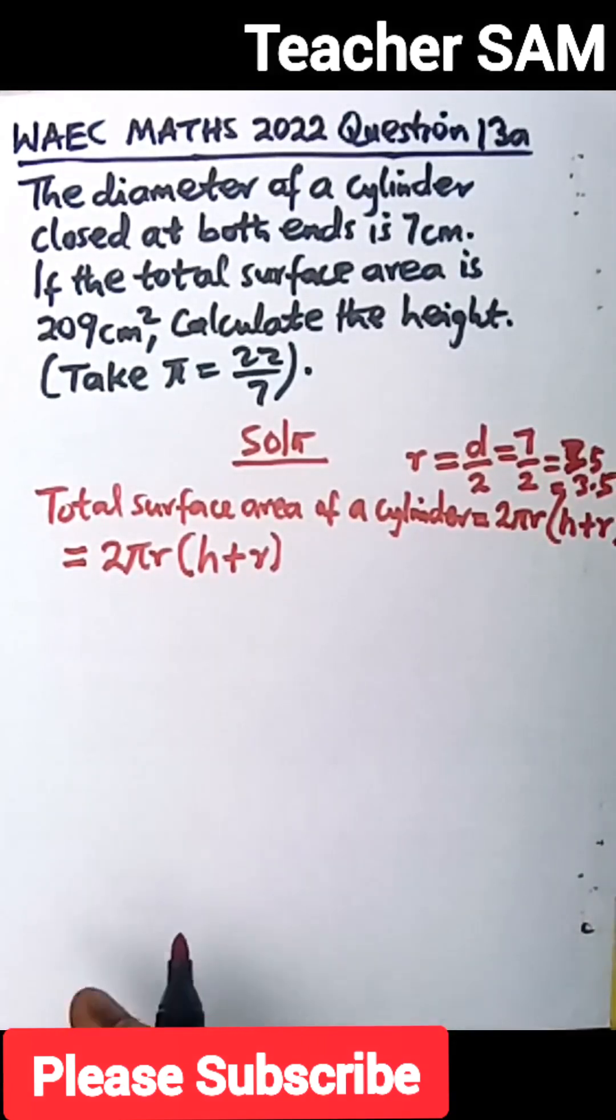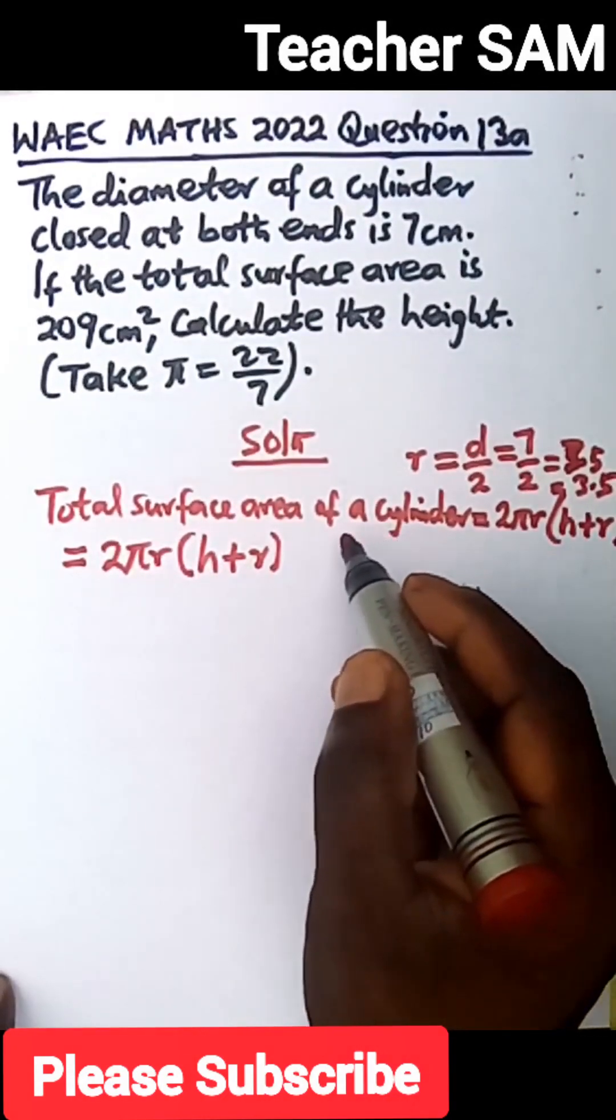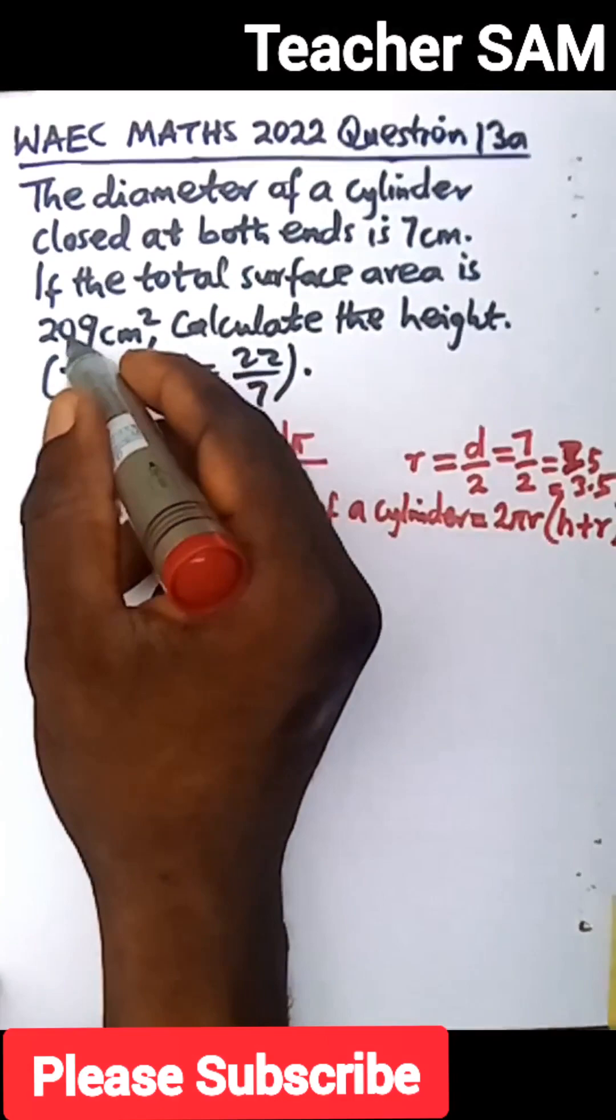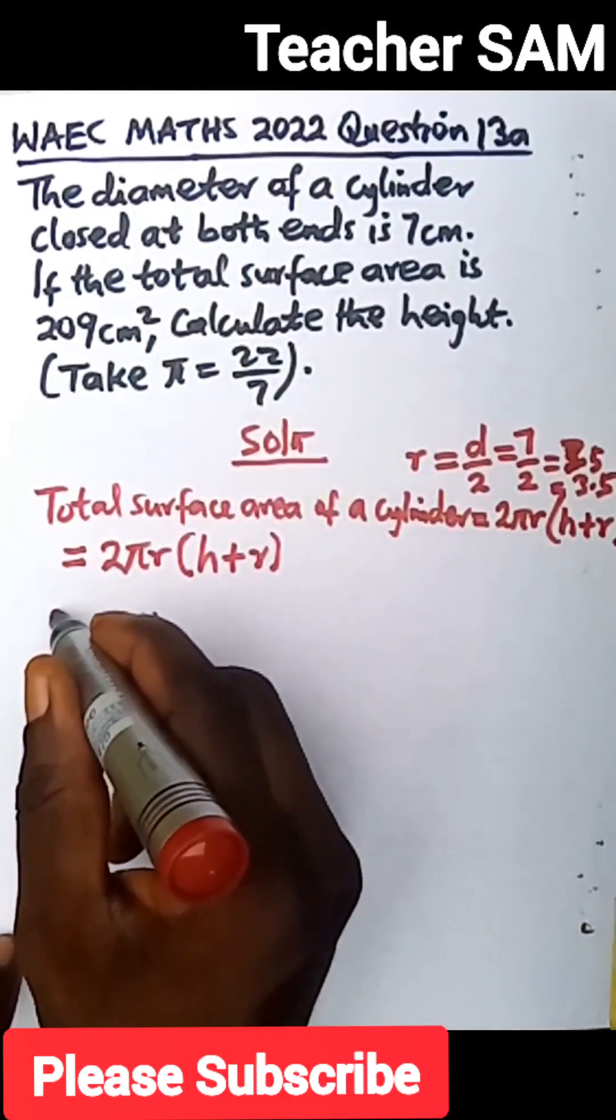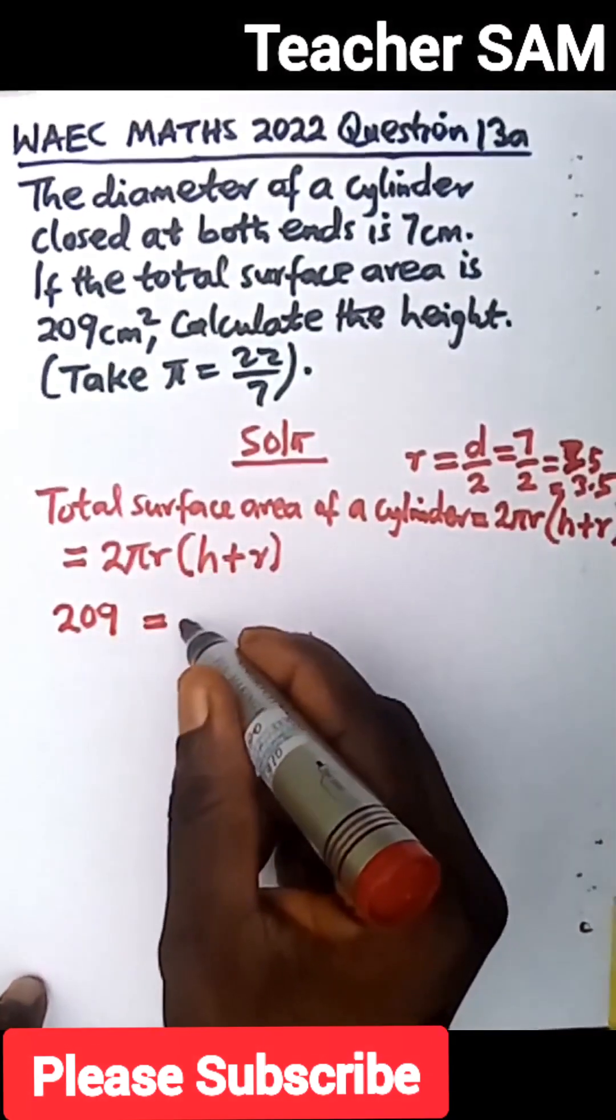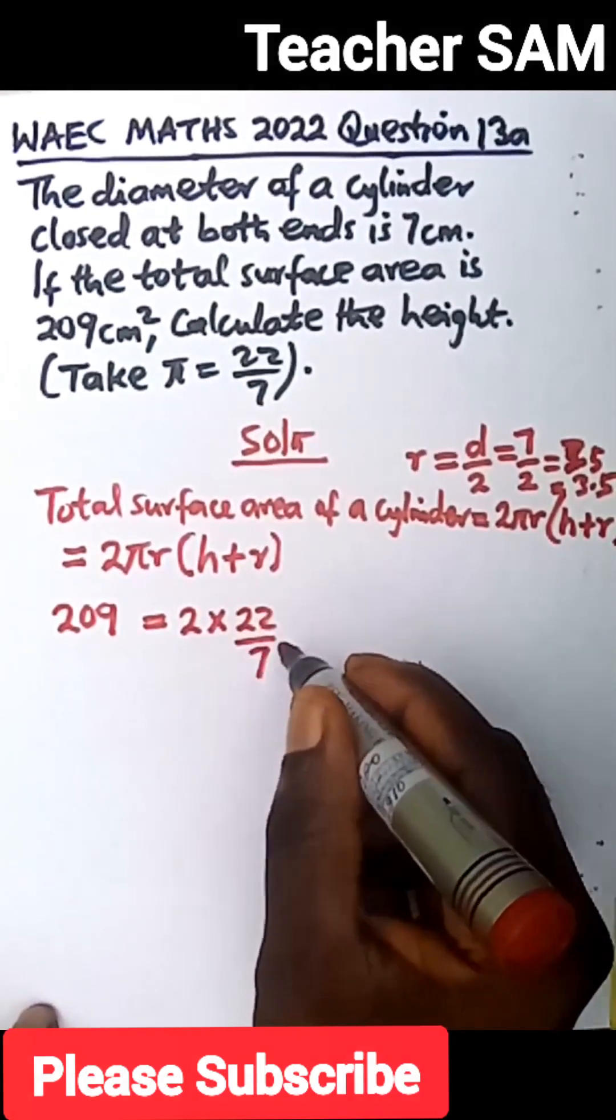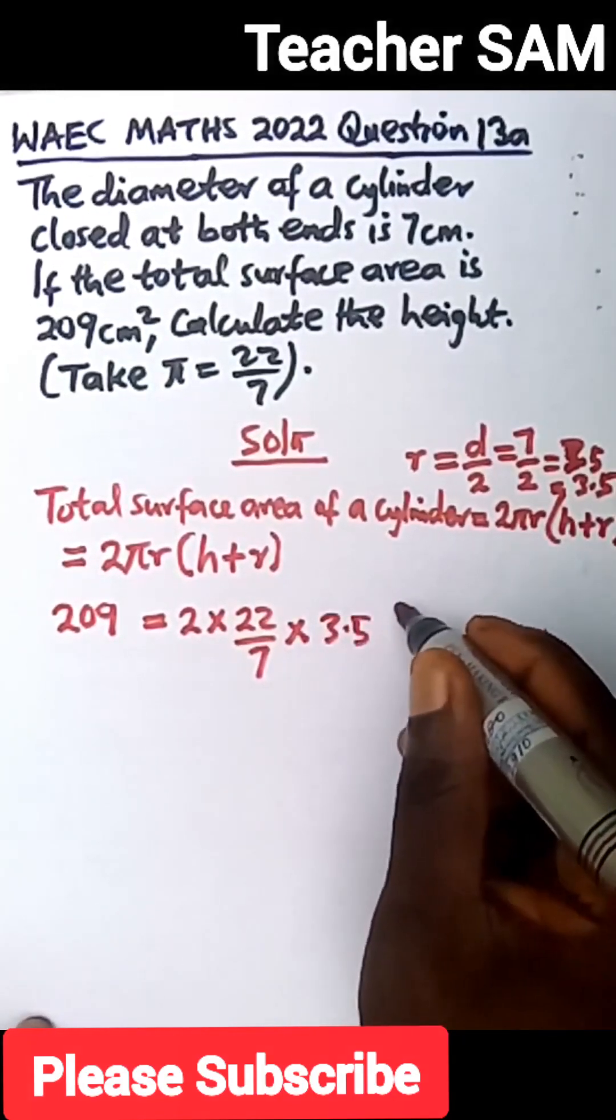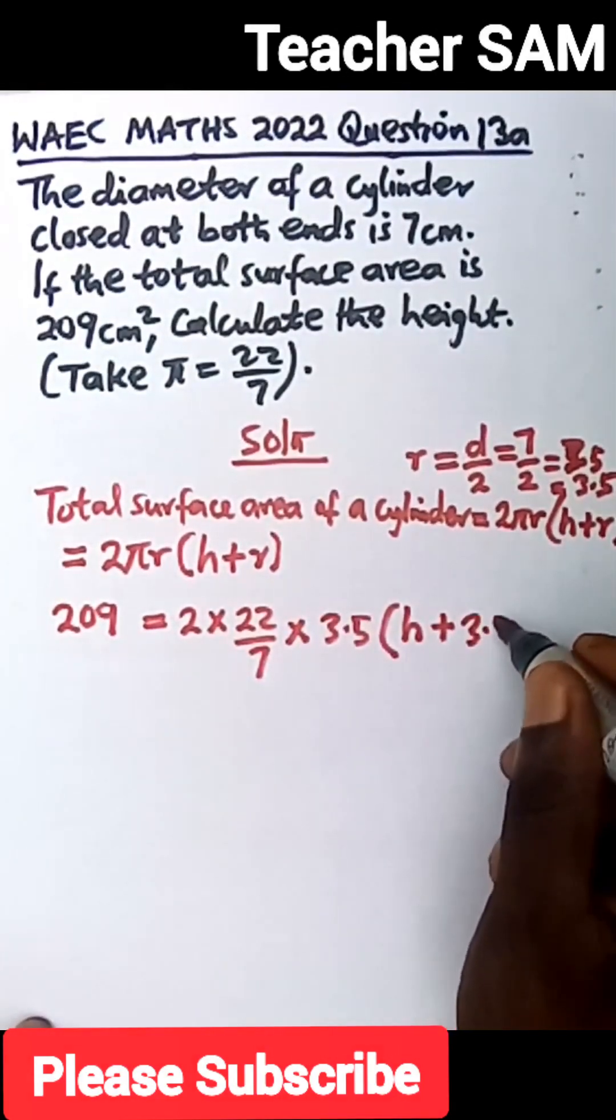We are going to substitute that into this formula. The total surface area of the cylinder has been given to us as 209 cm squared. So we substitute: 209 equals 2 times 22 over 7 times our radius 3.5 into our height, which we don't know. That is what we are looking for.